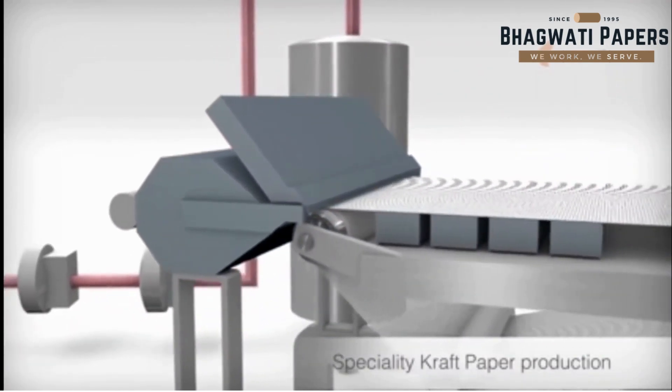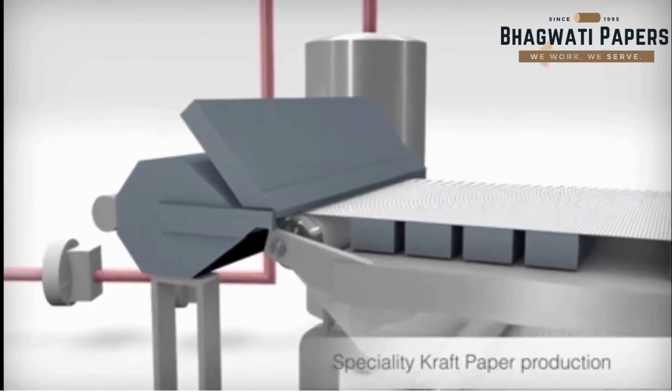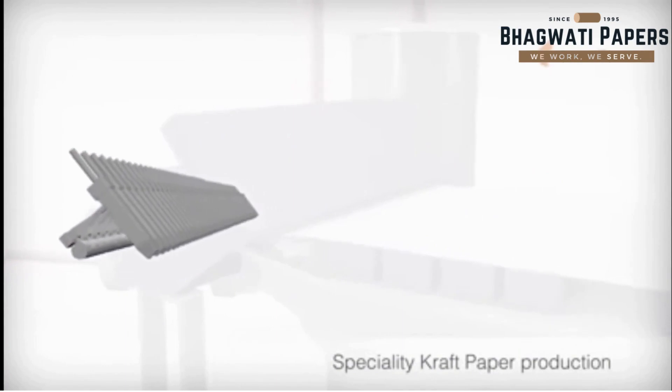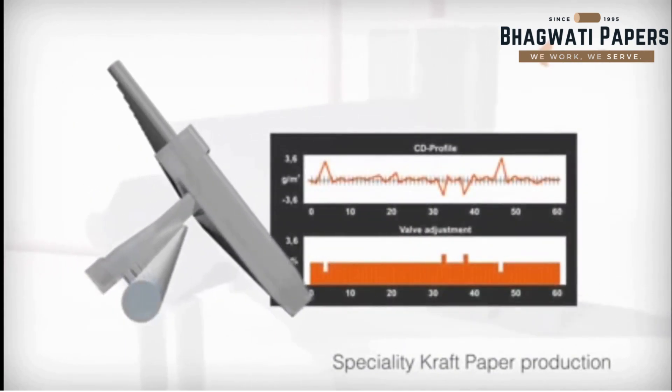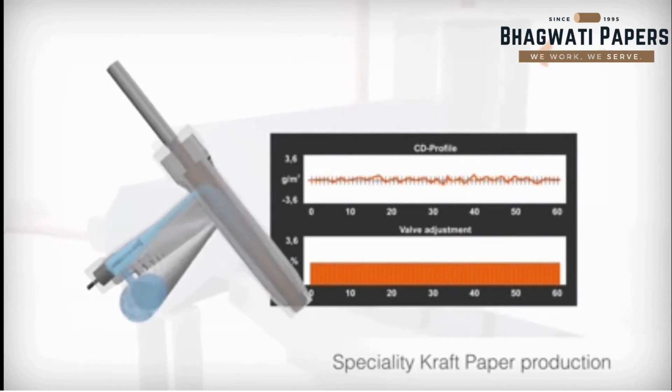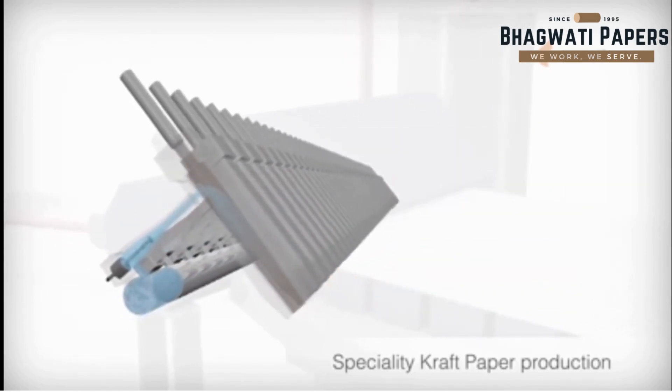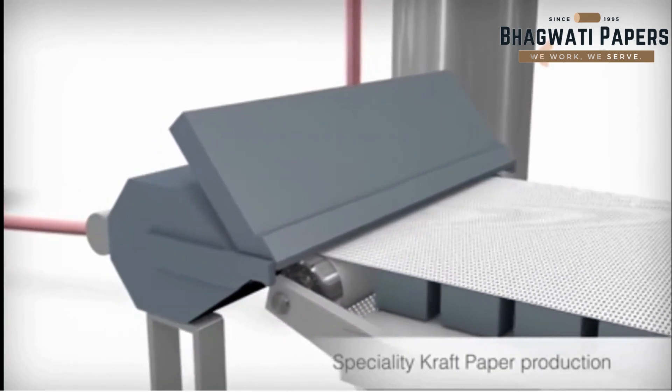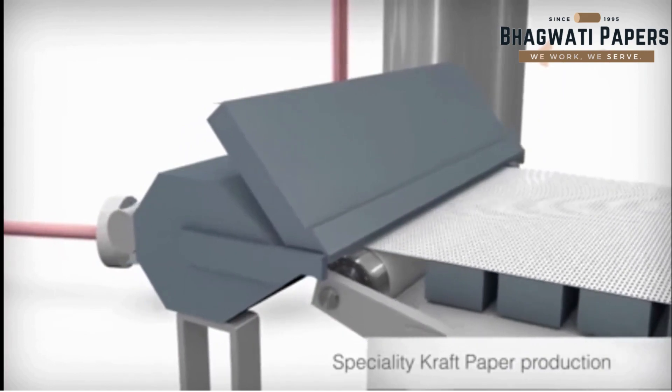The state-of-the-art dilution water head box is equipped with a number of valves across the whole width of the paper machine, which regulates the basis weight profile by adding defined amounts of dilution water as required. This modern computerized technology ensures even profiles across the whole width of the paper machine.